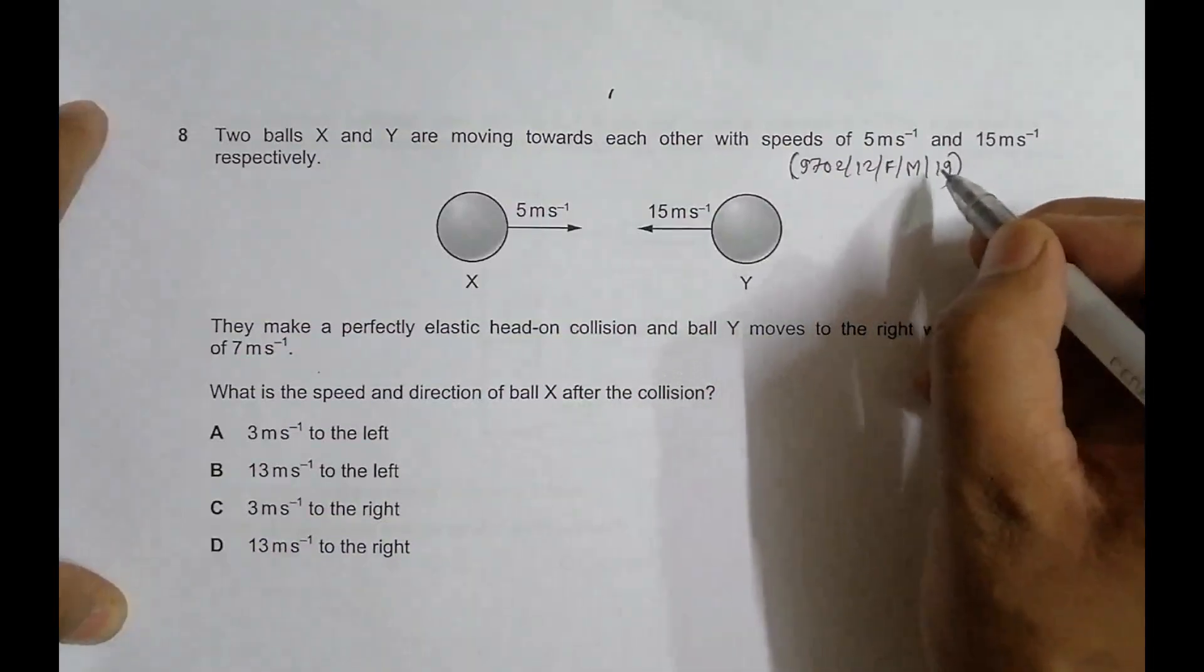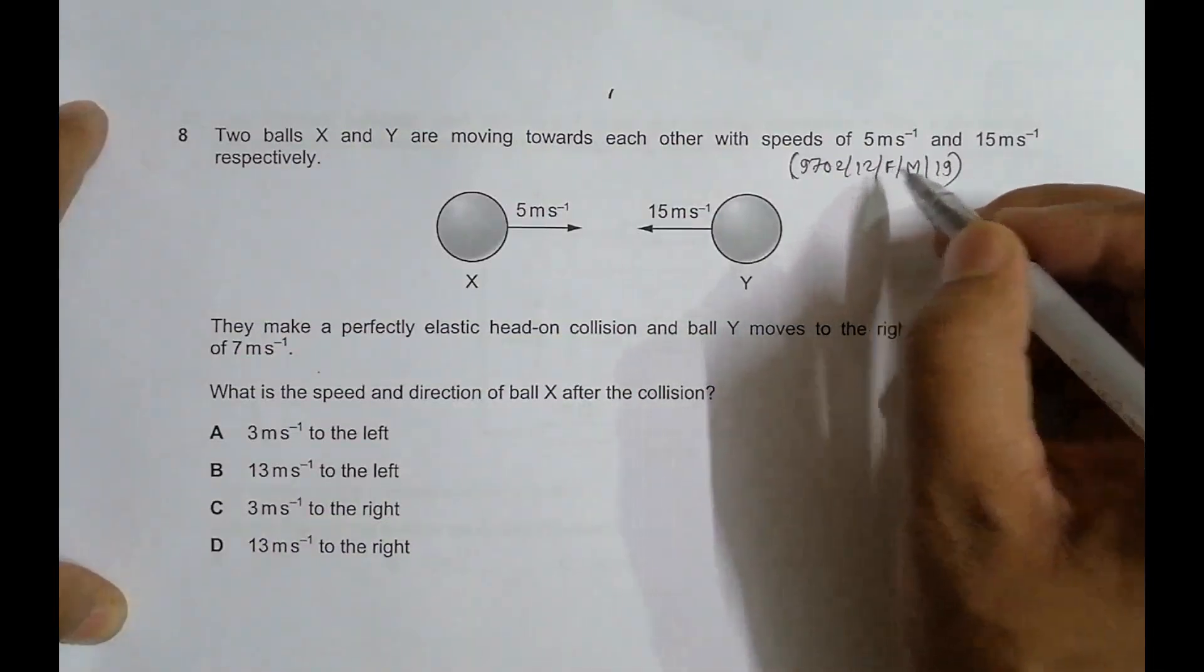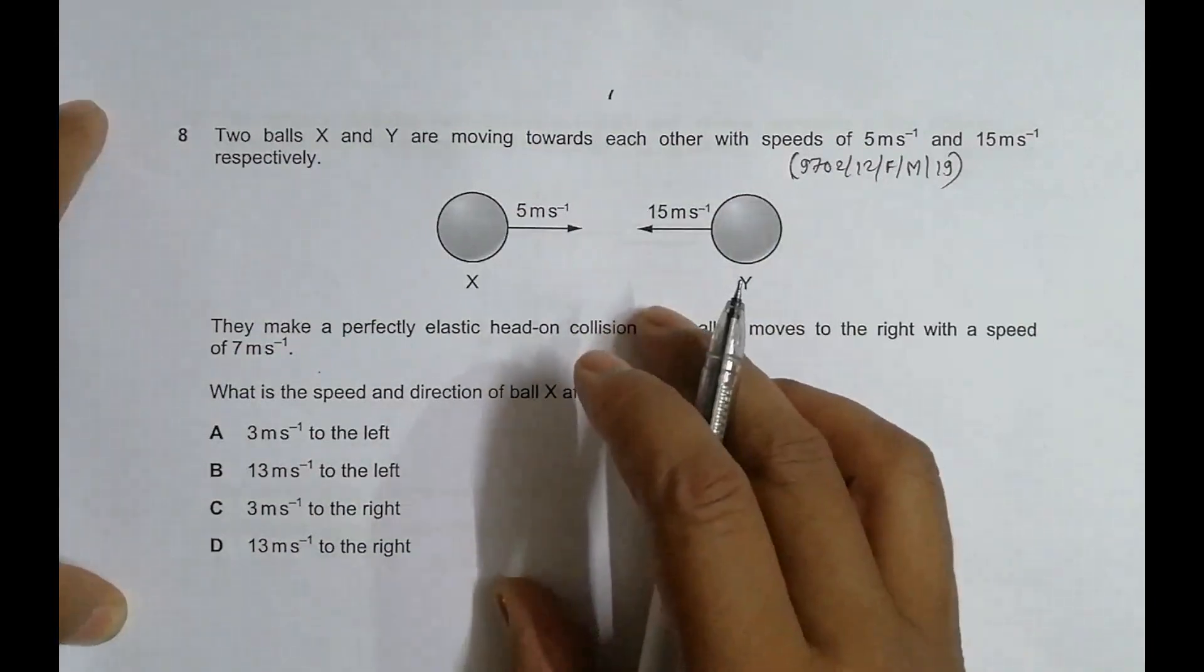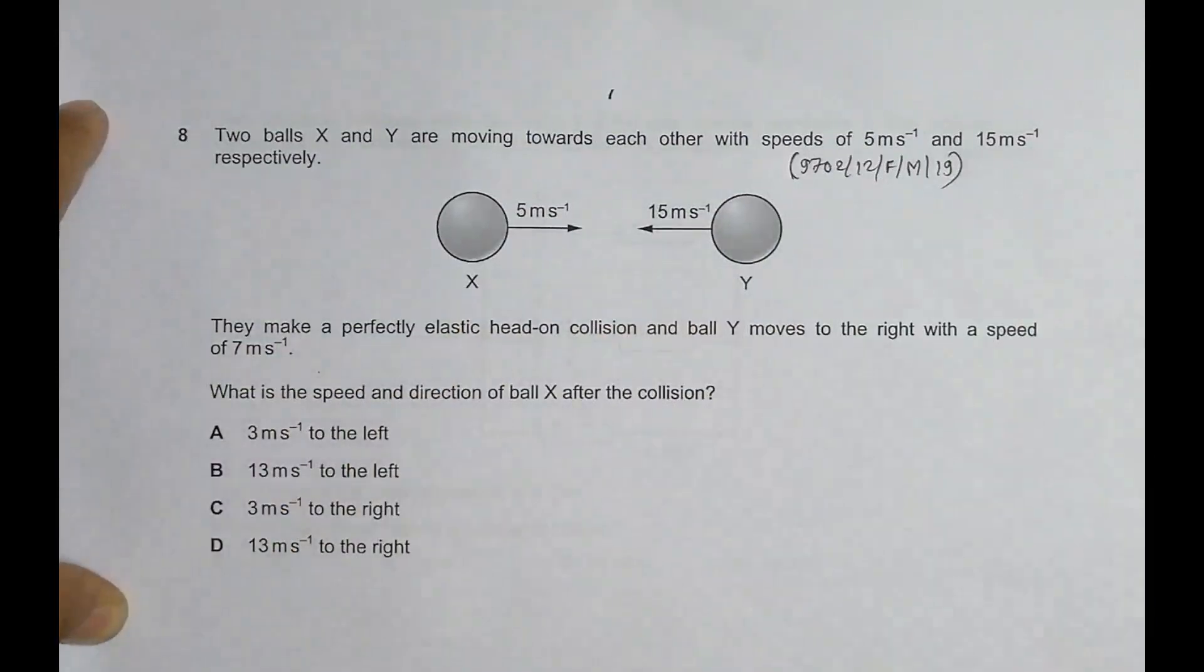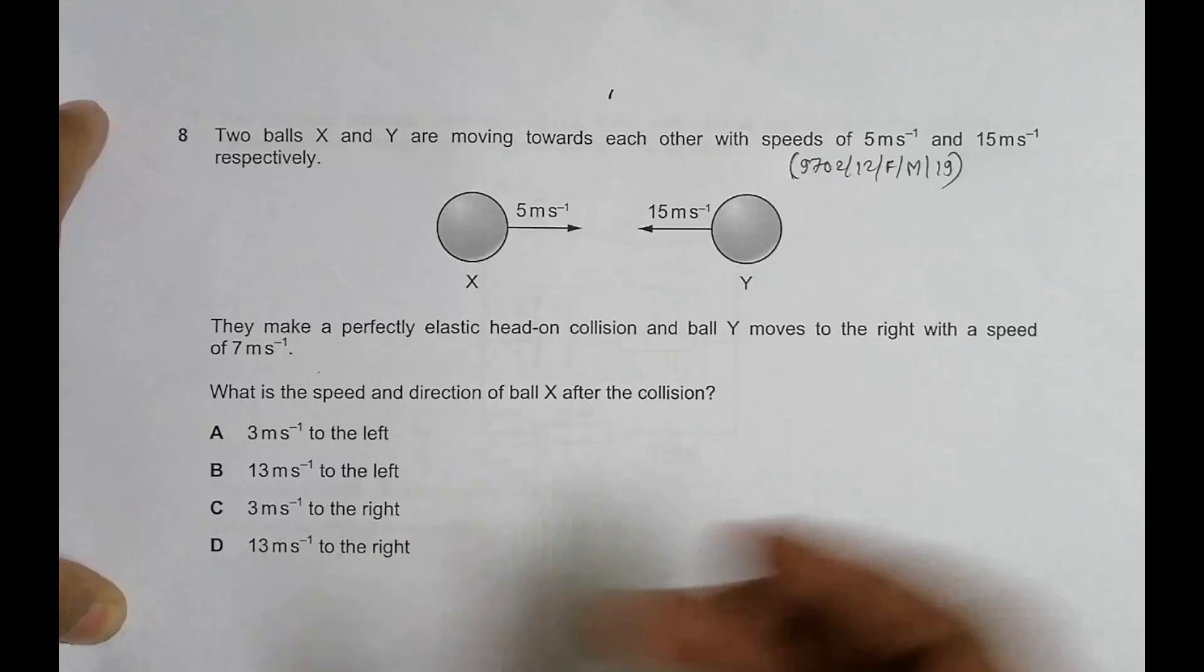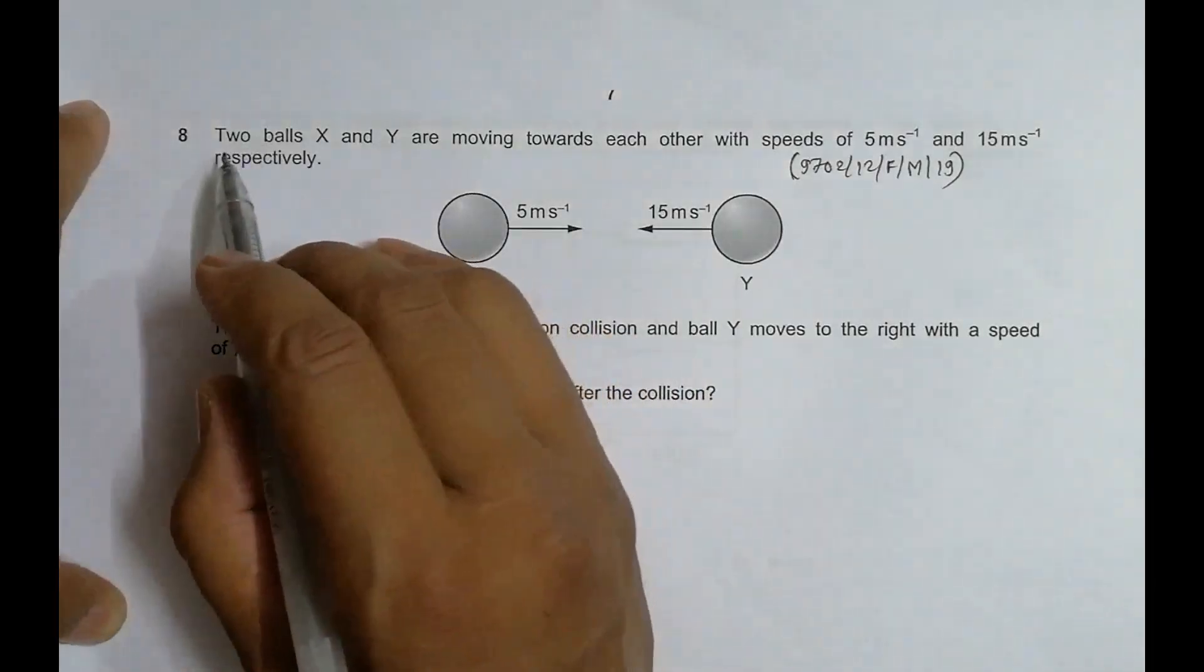Hello folks, this question belongs to 2019 February-March Paper 12, question number 8. It is concerned with the chapter on dynamics. As you can see from the diagram, it looks like a collision between two balls.